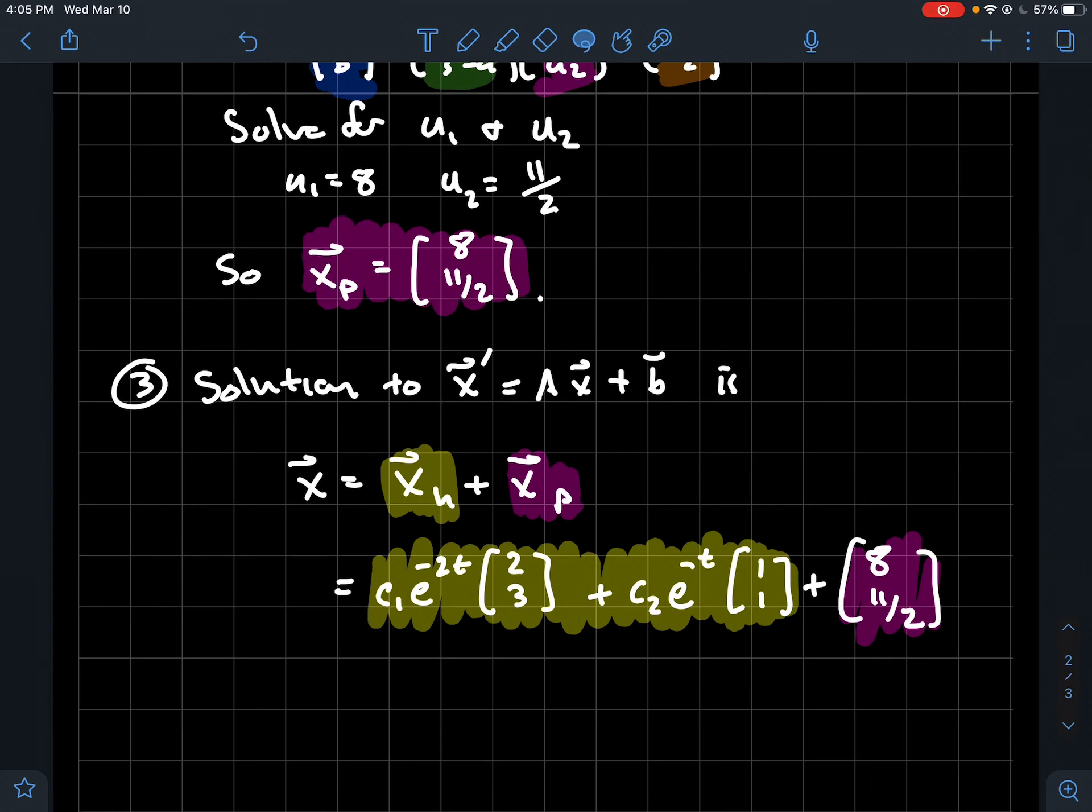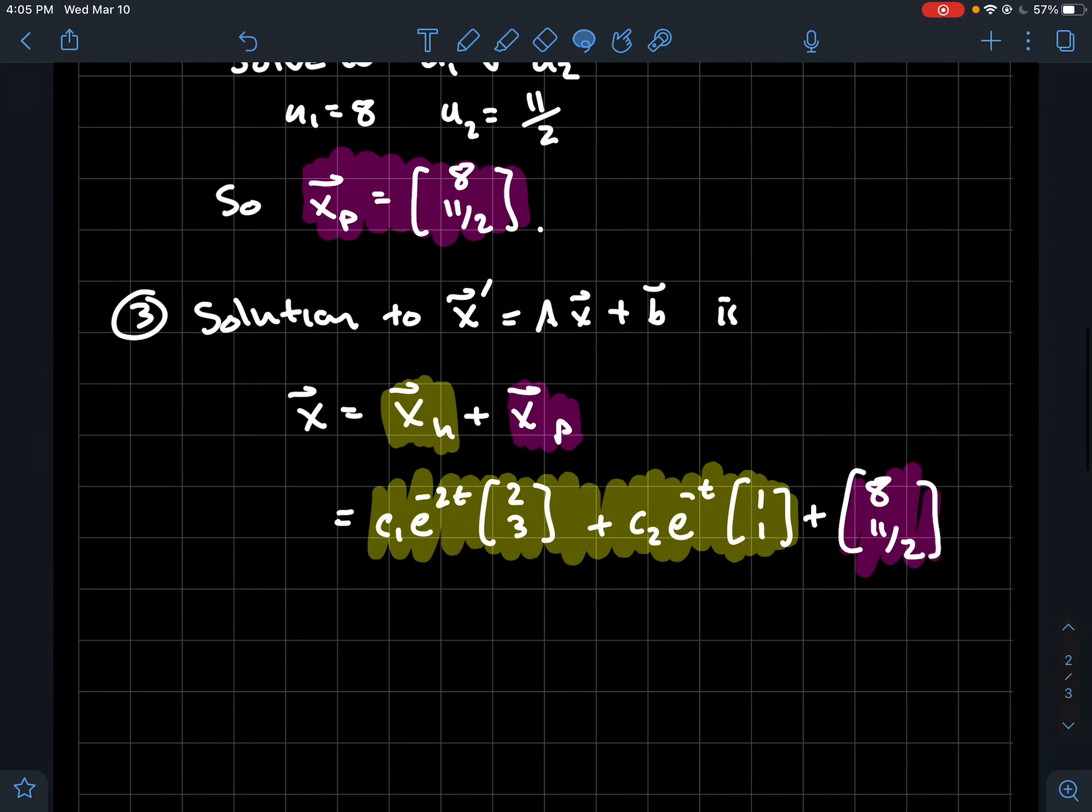If we plug those in, the general solution to our inhomogeneous system looks like the yellow, which is what we found in step one, plus what we found, the particular solution that we kind of eyeballed and did a little bit of engineering to make sure it would work in step two.